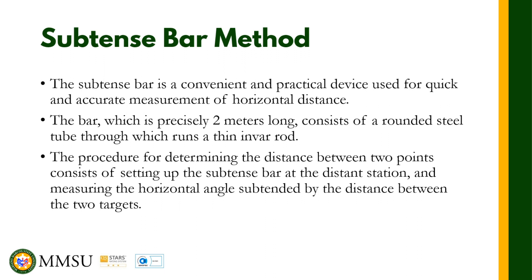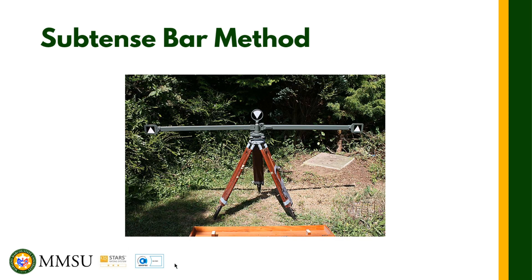The procedure for determining the distance between two points consists of setting up the subtense bar at the distance station and measuring the horizontal angle subtended by the distance between the two targets.